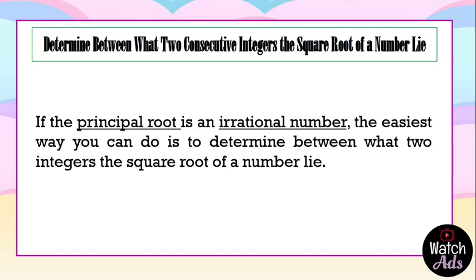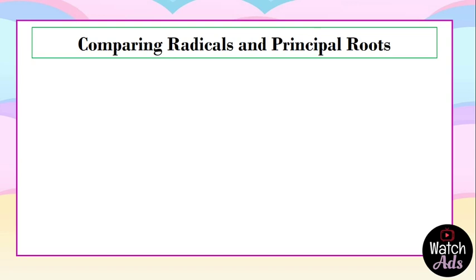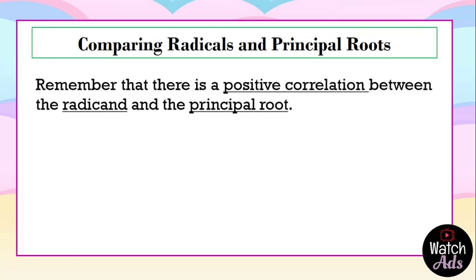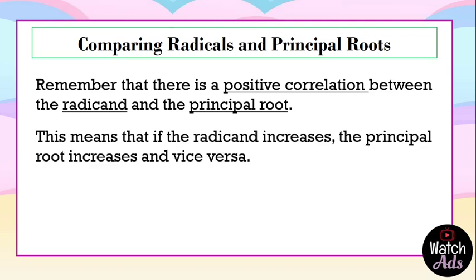Remember, if the principal root is an irrational number, the easiest way is to determine between what two integers the square root of a number lies. But before that, we have to know how to compare radicals and principal roots. There is only one golden rule: there is a positive correlation between the radicand and the principal root. This means that if the radicand increases, the principal root increases, and vice versa — if the radicand decreases, the principal root also decreases.